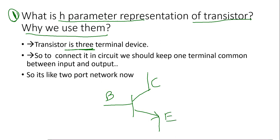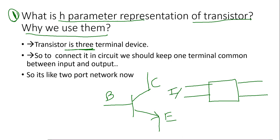Now when we want to connect this three terminal device into a circuit, any circuit will have two inputs and two outputs. But the transistor is only having three terminals. So we should keep one terminal common between input and output. This is the input side and this is the output side.